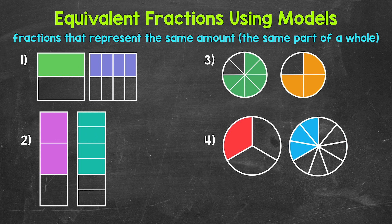Let's jump into number one, where we have two squares that are the same size, but each square is divided into a different number of equal parts. Now we can see that the same amount of each square is shaded in. These squares represent equivalent fractions, so let's write these fractions out. We'll start with the square on the left. The square on the left was divided into two equal parts, so two is our denominator. One of the parts is shaded in, so one is our numerator. One half of the square is shaded, so this square is representing one half.